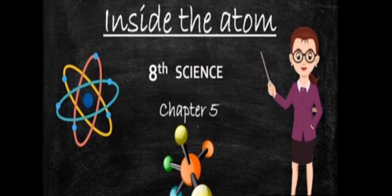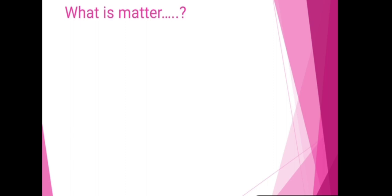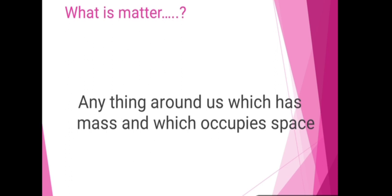The very first concept you must have studied in your previous class is about matter. Now children, what is matter? Can you recall the answer? Matter means anything around us which has mass and which occupies space. Anything around us means whatever materials or objects you can see around you — like table, pen, your mobile, pencil, notebooks — all the materials you can see around you are called matter. Matter can be in any state: solid state, liquid state, or gaseous state.